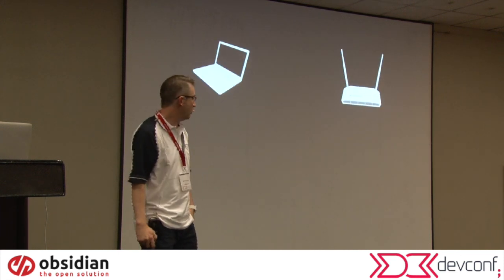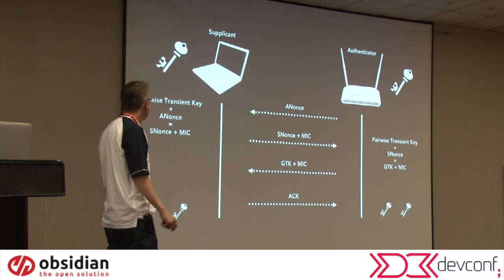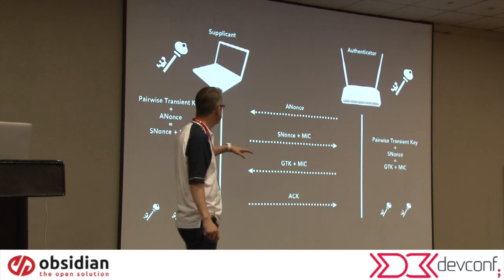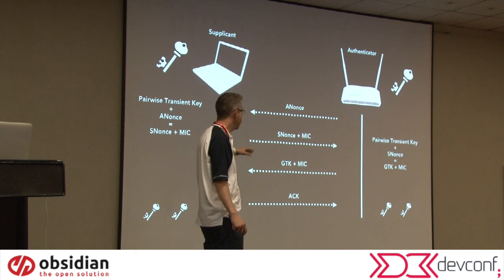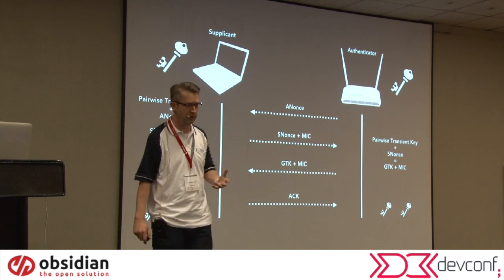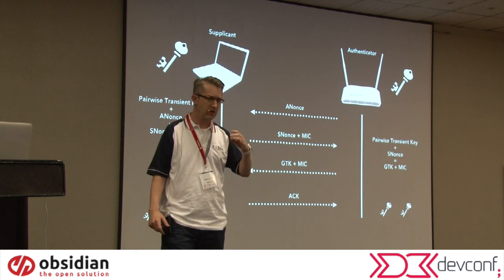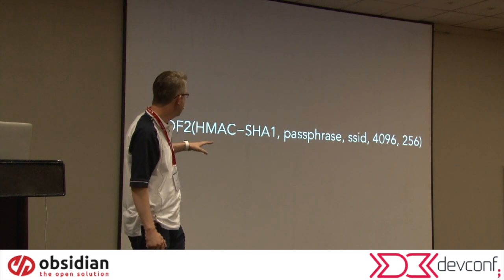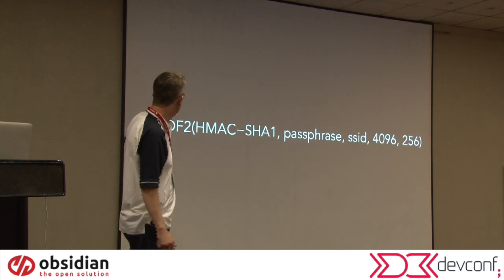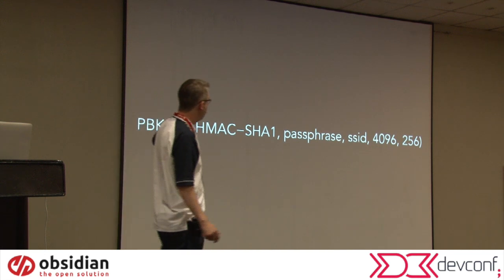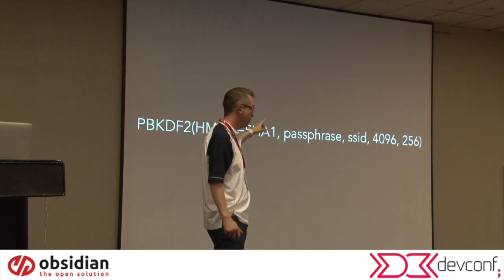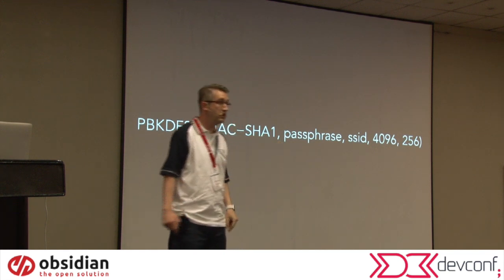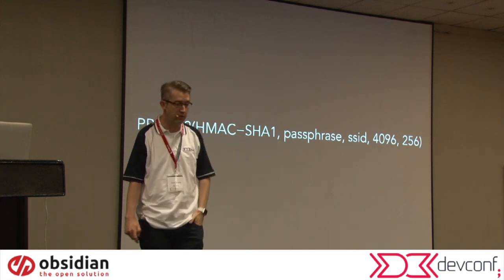So it's a bit of a complicated process, but they go through something called a four-way handshake. There are four interactions that happen through something called management frames, and they actually end up with two keys at the end of the day. The important thing is that there is a password-based key derivation function using a hash with the passphrase you've entered and the SSID, which is the name of your wireless network.